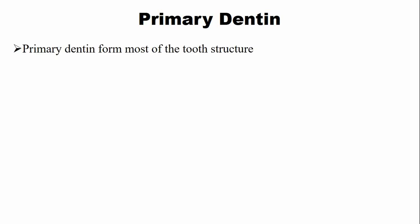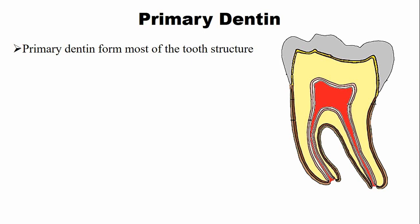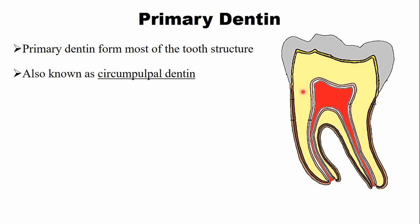The first type of dentine is the primary dentine. Primary dentine forms most of the tooth structure. In this diagram showing a molar, the yellow color just below the enamel indicates the primary dentine. Primary dentine is also known as the circumpulpal dentine.